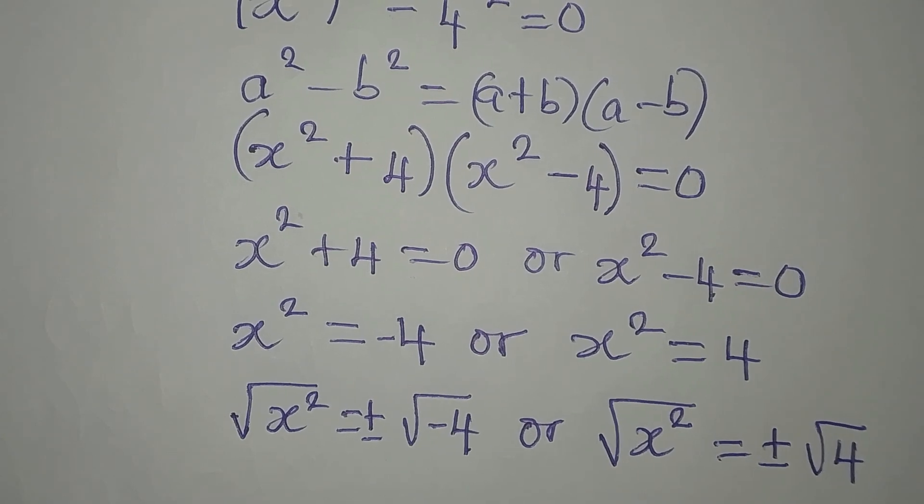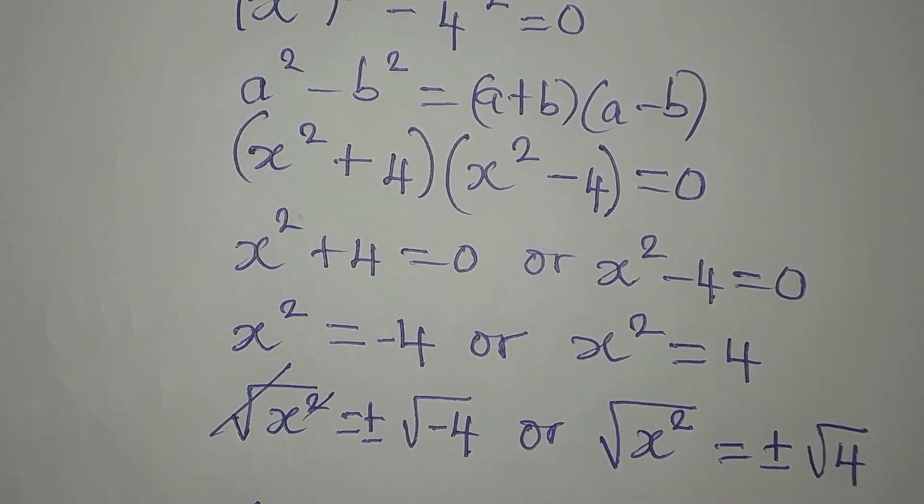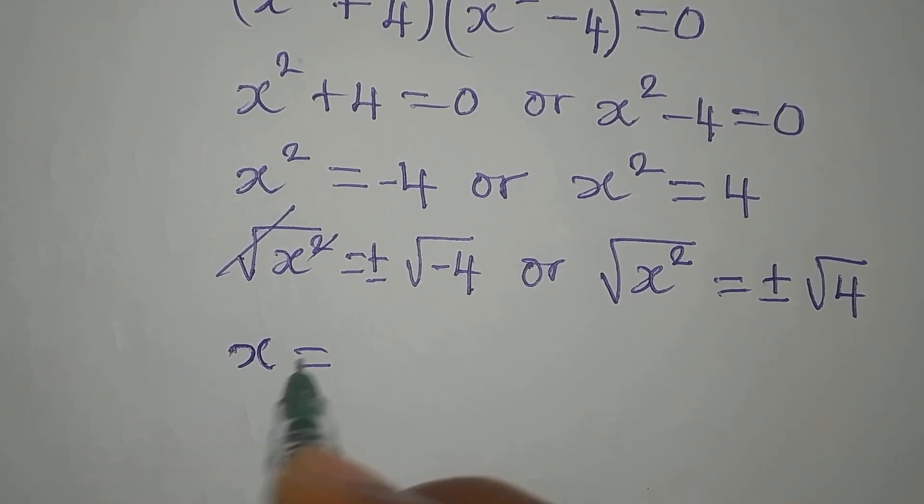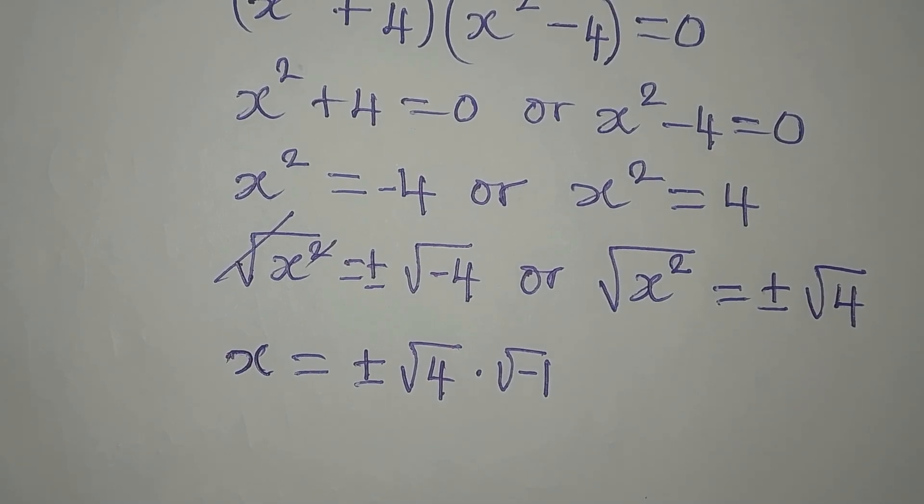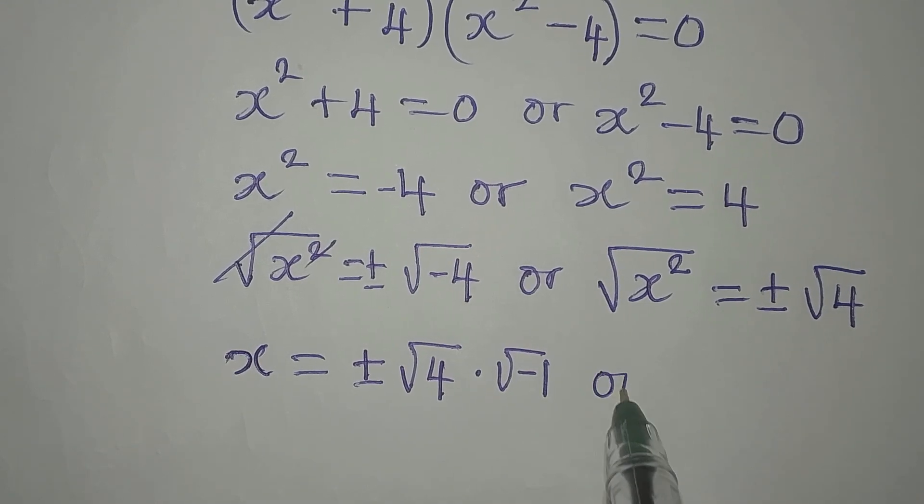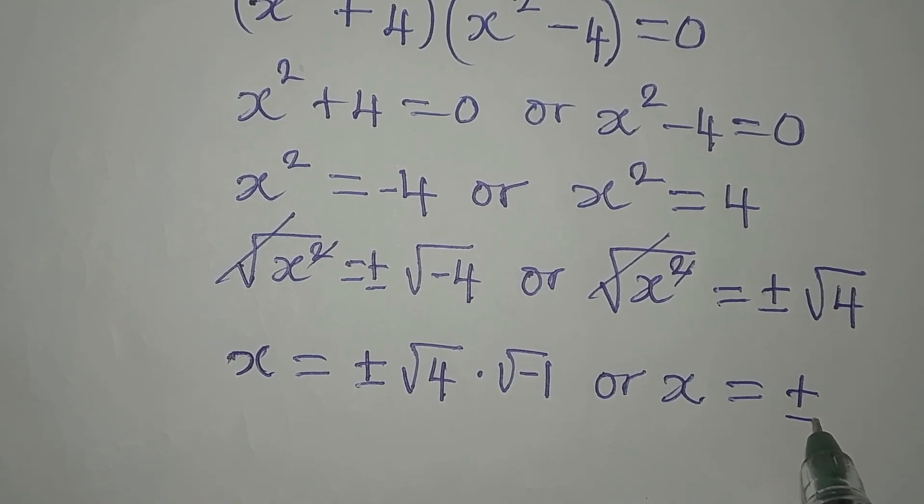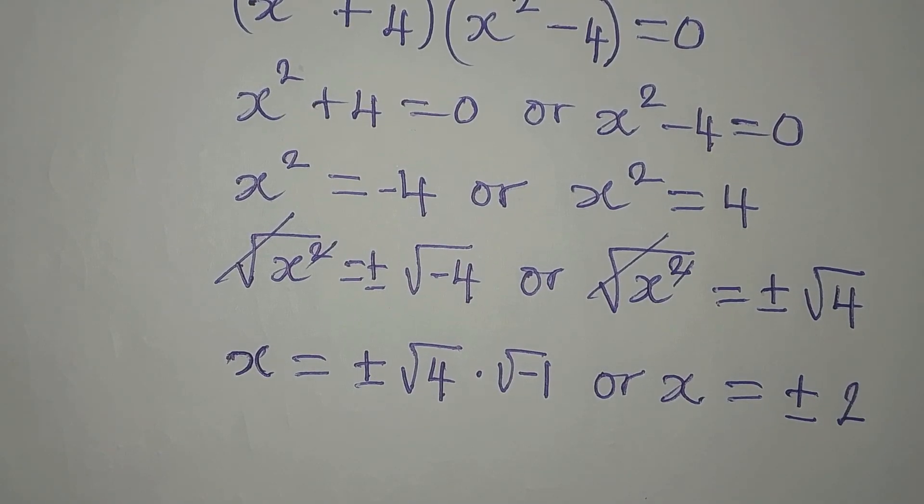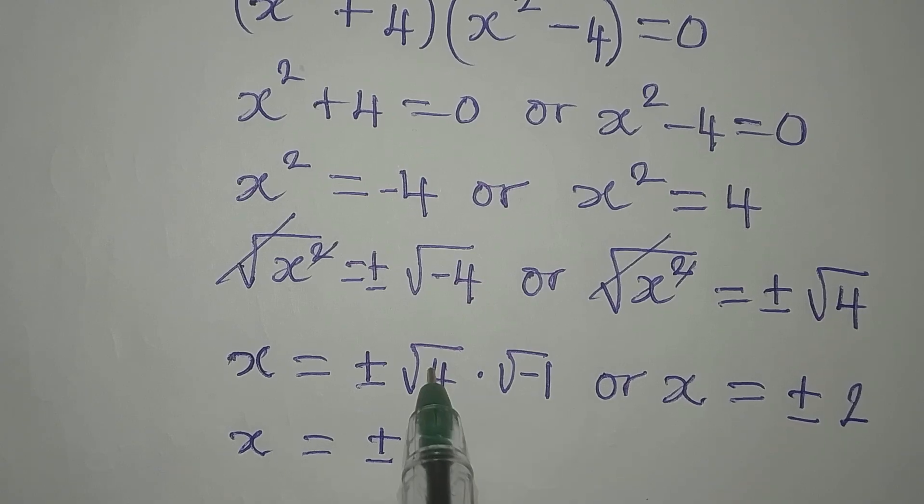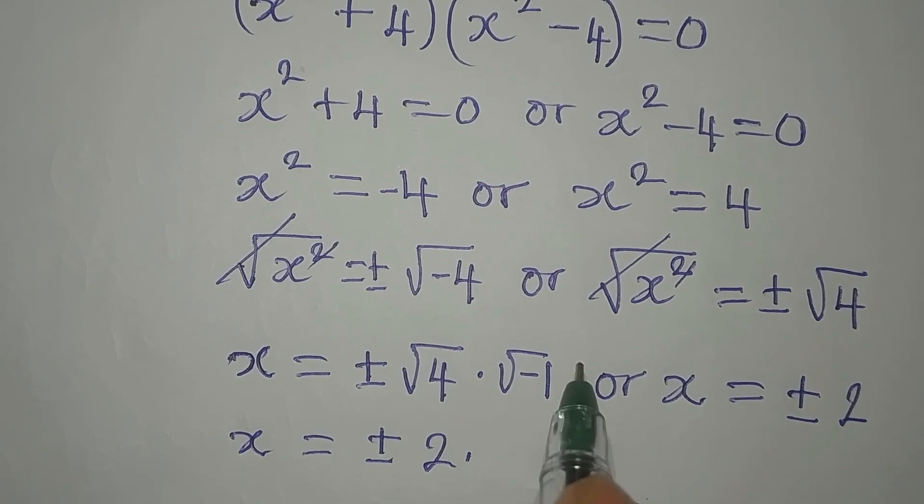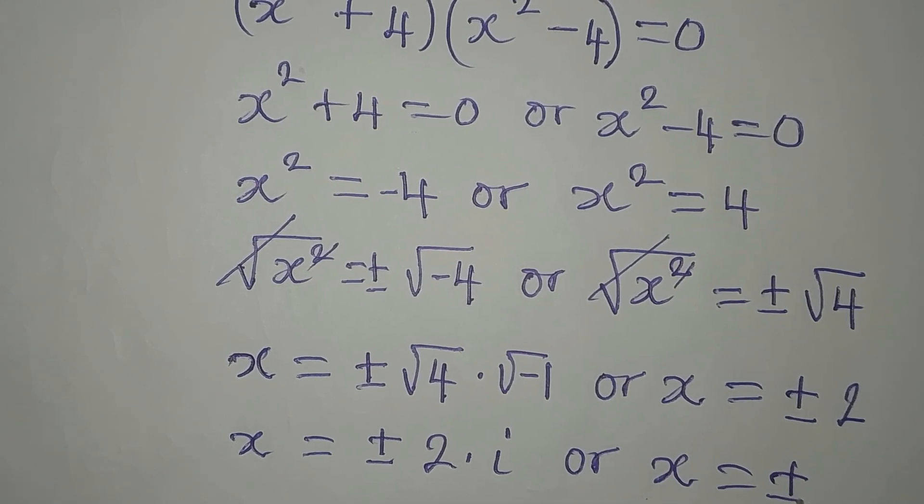From here we can rearrange this. X will be equal to plus or minus square root of 4 times square root of negative 1. I just picked out the negative. So we have x to be equal to plus or minus square root of 4, here is 2. Or on this side, x is equal to plus or minus 2. Multiply these two, so x will now be plus or minus 2i, or x is equal to plus or minus 2.